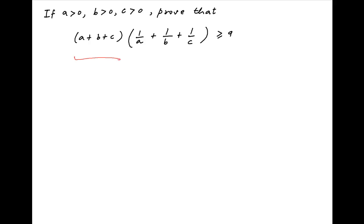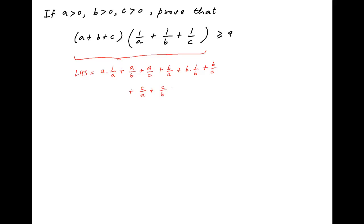The left-hand side of this inequality can be written as a times (1/a + a/b + a/c) plus b times (1/b + b/c + c/a + c/b) plus c times 1/c. This is equal to 3 plus a/b + a/c + b/a + b/c + c/a + c/b.